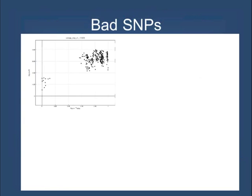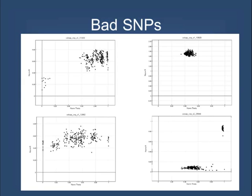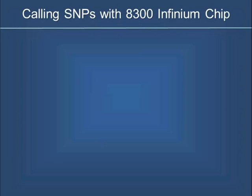Here are some examples of bad SNPs. You can see we just don't have any tight clustering — it's just a scattering of dots all over the place. Here we're not seeing any type of segregation going on for the progeny or parents. Here again, just a cloud. And then when they're close to the X axis, that is questionable whether we got a good call on that. There are many more bad calls that we could consider.